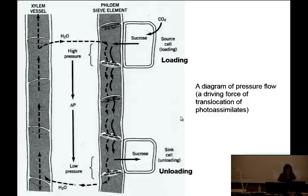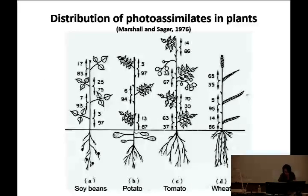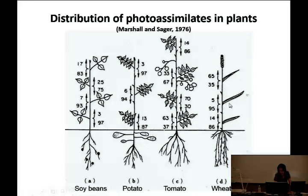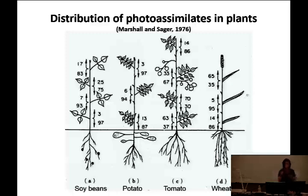For soybeans and potato, the sink is located in the ground, so you can see a lot of allocation going downward to lower leaves. For wheat, with a big sink at the top, allocation is mostly upward for upper leaves. The message is that direction and location of allocation is determined by the location and strength of the sink relative to the source.